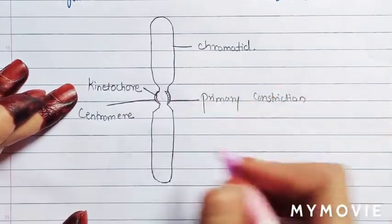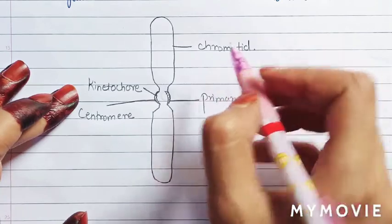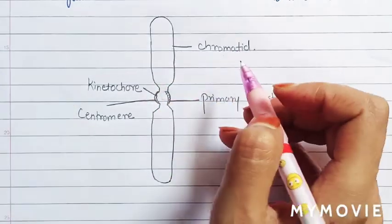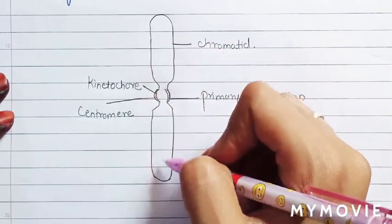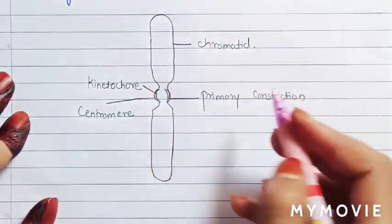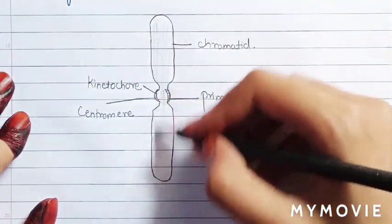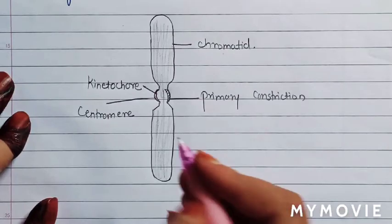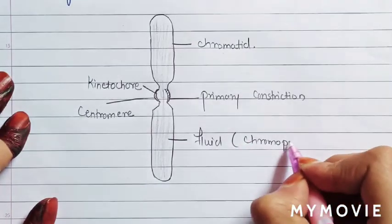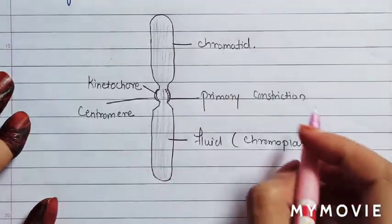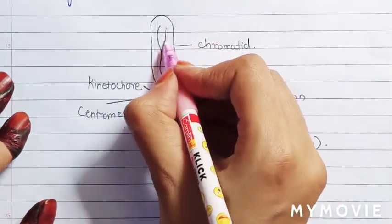If we see the chromosomal structure, you can see the fluid present inside this chromosome. The two arms are known as chromatids, and the fluid present inside the chromosome is known as chromoplasm. This chromoplasm also consists of a thread-like structure inside it.